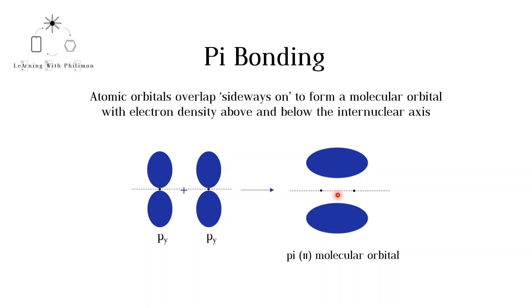All double and triple bonds are pi bonds. This idea will be further explored in the next video on hybridization.